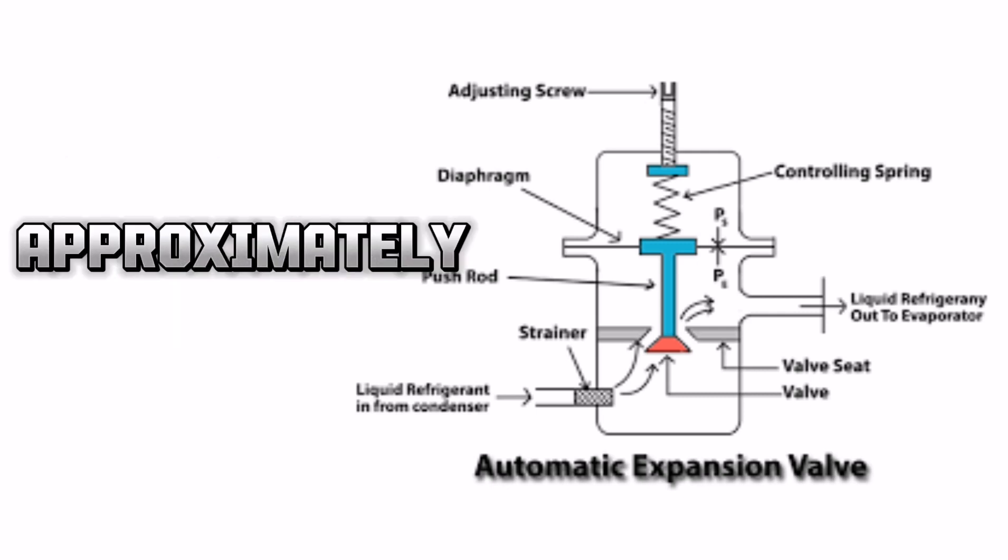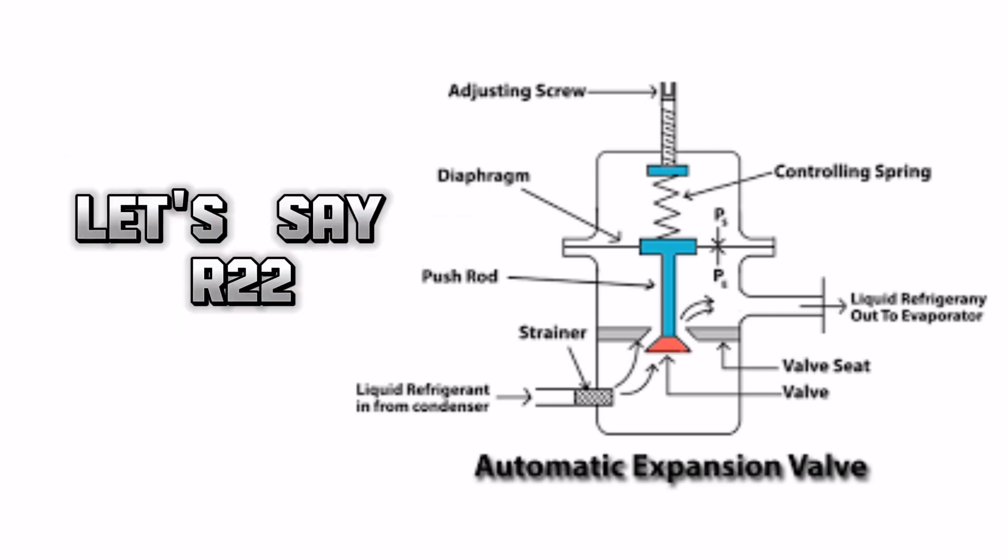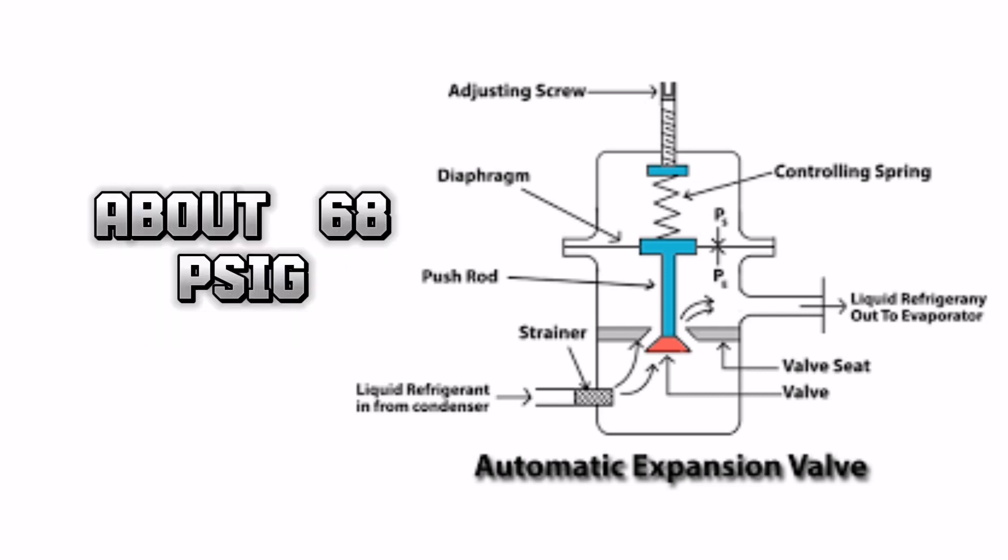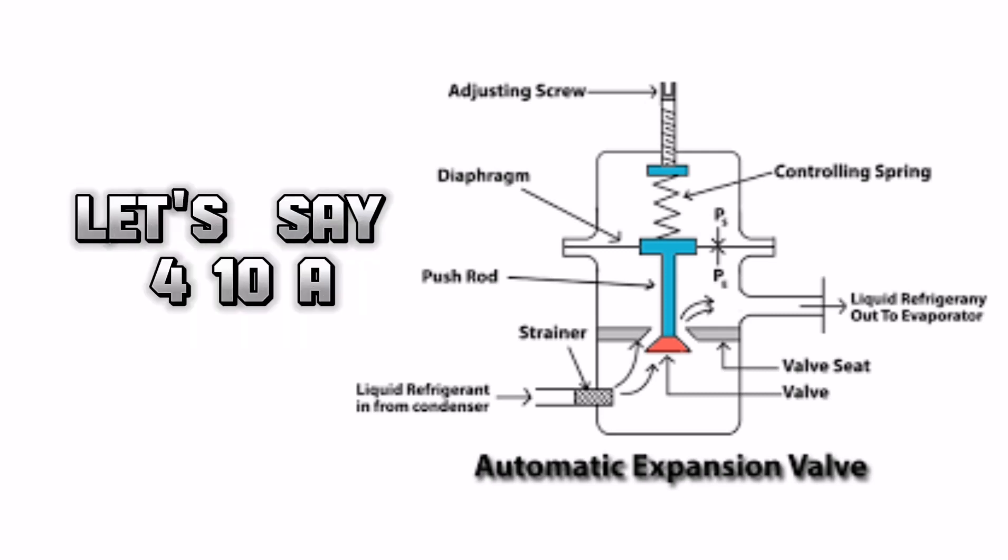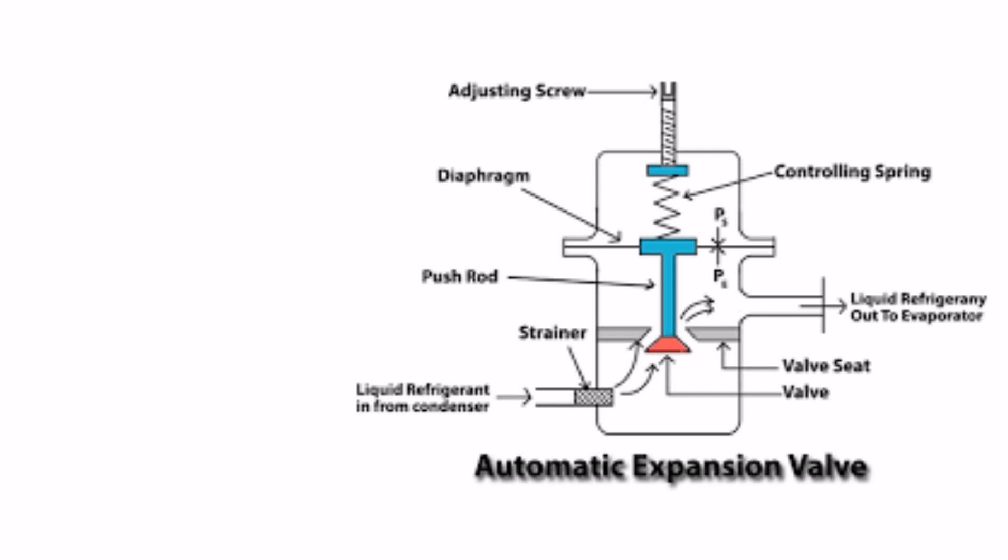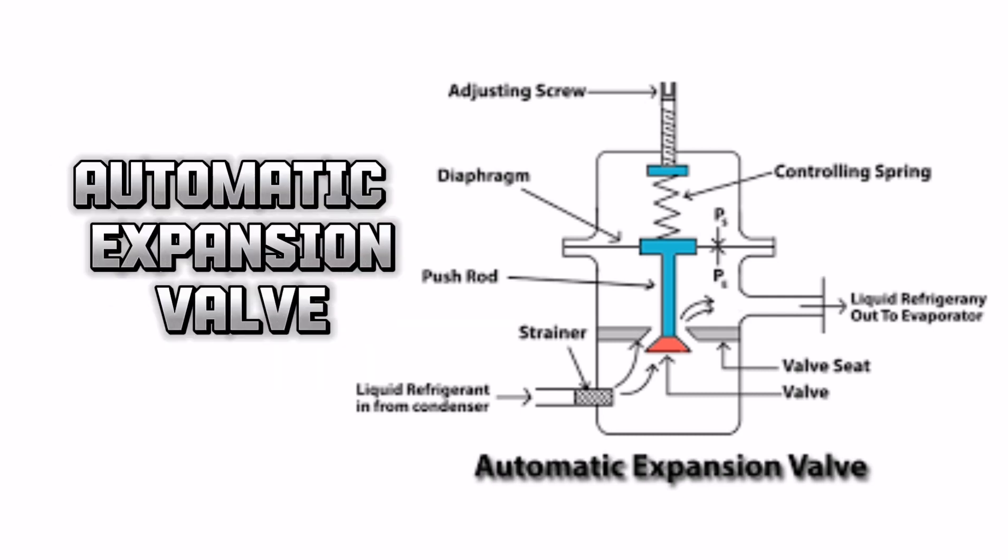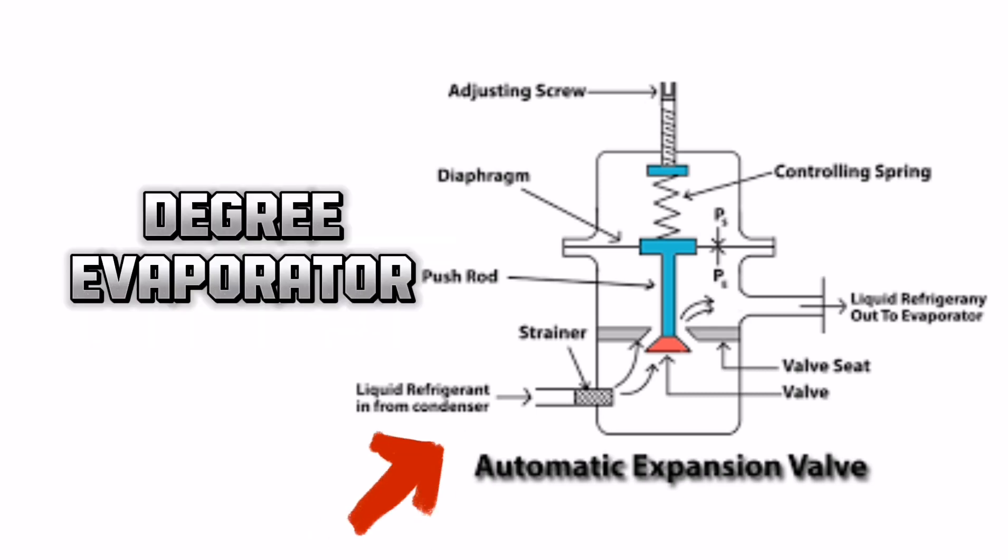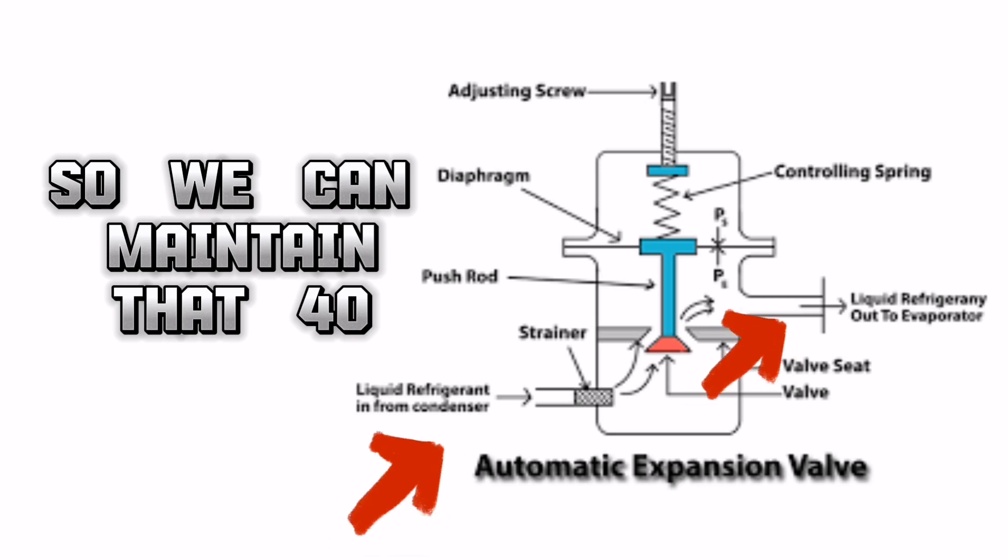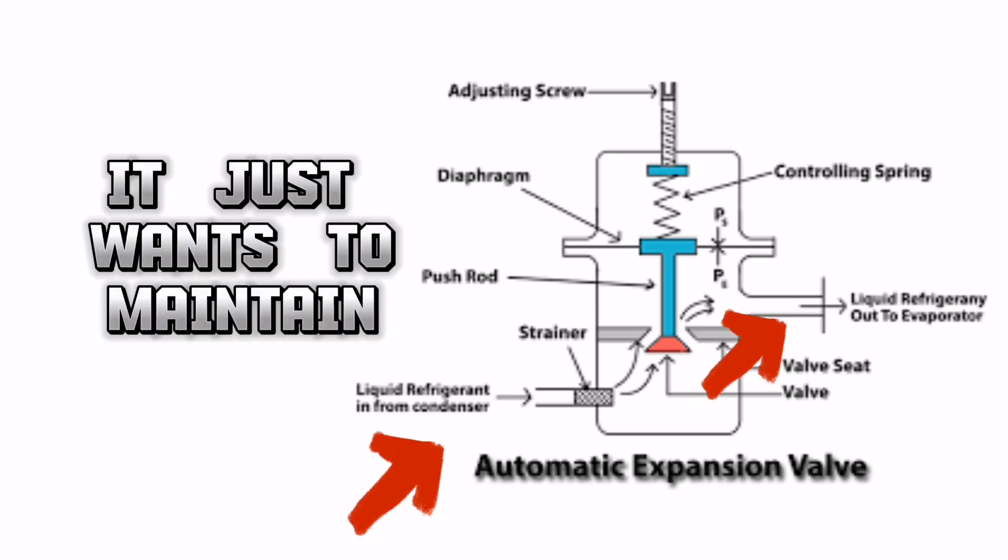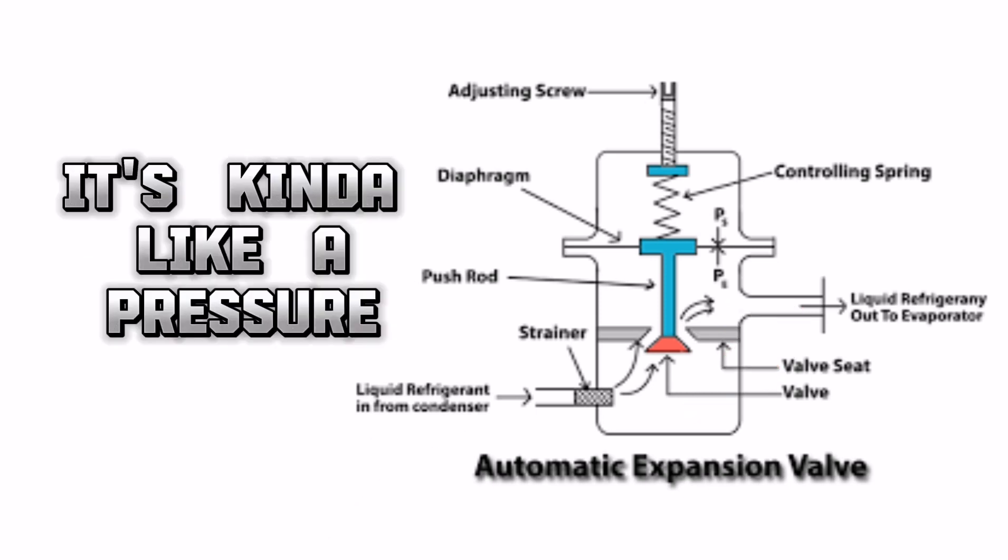But if we're looking at an R22 system, we're going to need approximately, let's say, 68 PSIG. If we were dealing with, let's say, 410A, then we're looking at about 118 PSIG. Somewhere around there. And that's going to give us 40 degrees. The automatic expansion valve is going to maintain the pressure, this pressure here, so that we can get a 40 degree evaporator. So we can maintain that 40 degree evaporator. It's not going to care about superheat. It's not going to care about subcooling. It just wants to maintain that pressure. It's kind of like a pressure regulating valve.